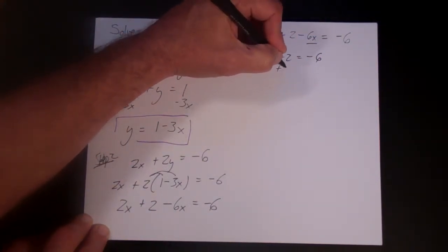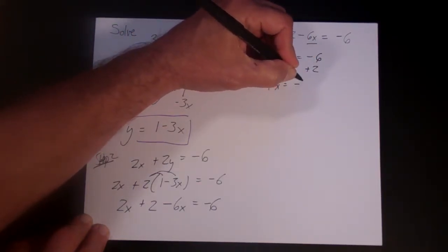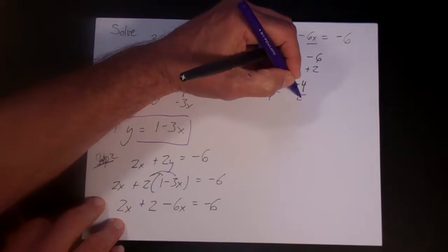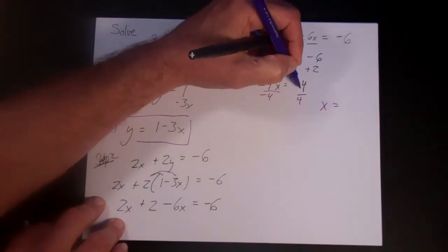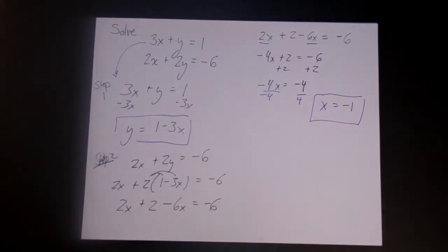Let's move the 2 to the other side. And you have minus 4x is equal to minus 4. And then let's divide both sides by minus 4. And you get x is equal to minus 4 over 4 or minus 1. And this is actually part of your final answer.